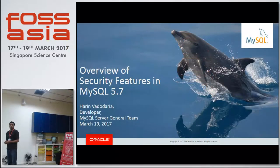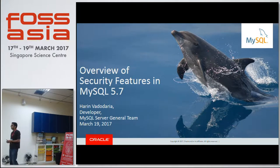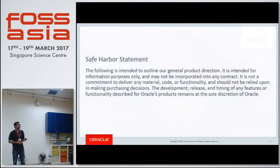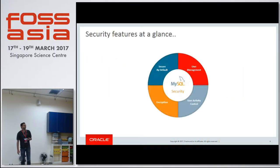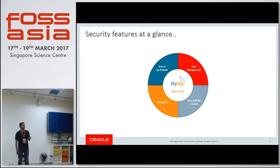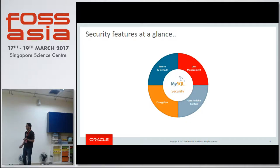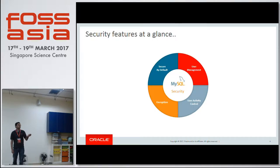Good morning everyone. I'll talk about features that we have in MySQL 5.7. It's a task for security. If we are to categorize security features that are part of the 5.7 release, we can broadly classify them in four areas: user management related features, activity control related features, encryption and communication security, and the attempt to make the installation secure by default. I'll go over each category and list the features and explain in detail.